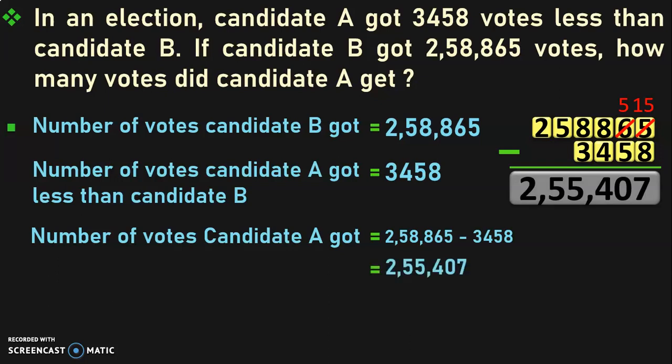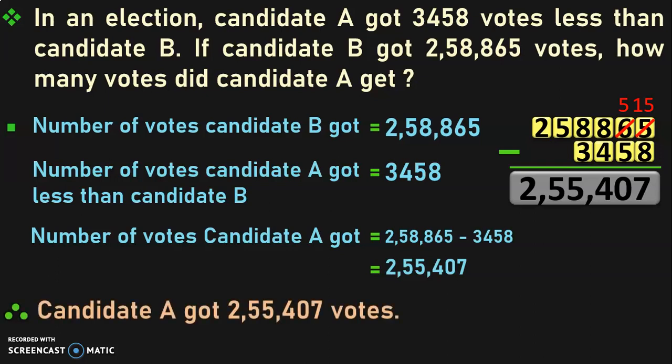So, this is the number of votes candidate A got. Therefore, candidate A got 2,55,407 votes.